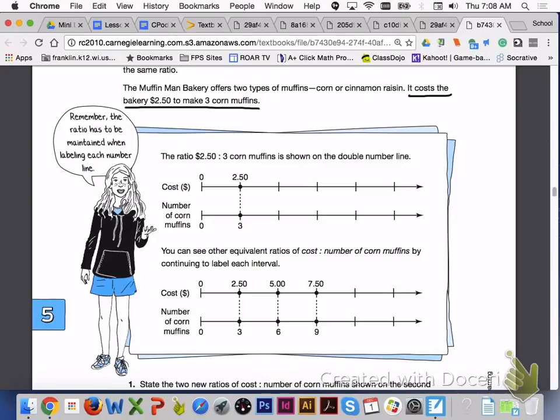The muffin man bakery offers two types of muffins, corn or cinnamon raisin. It costs the bakery $2.50 to make three corn muffins. The ratio of $2.50 to three corn muffins is shown here on the double number line.